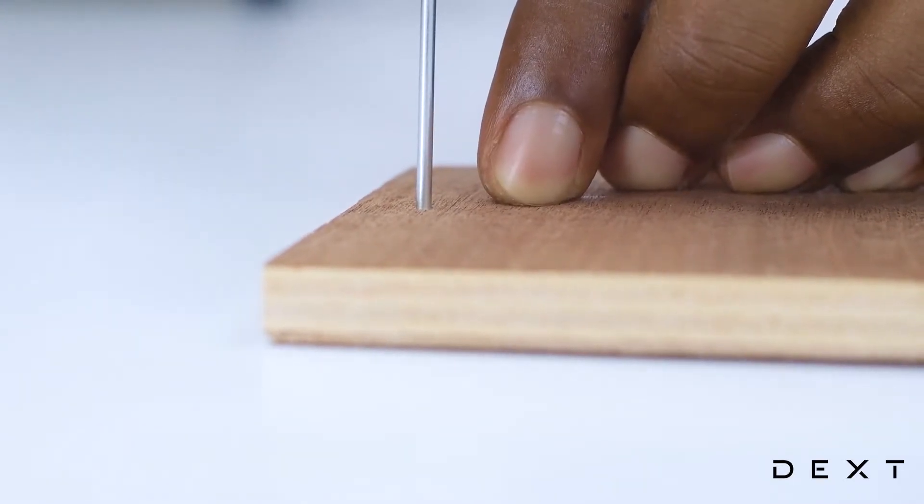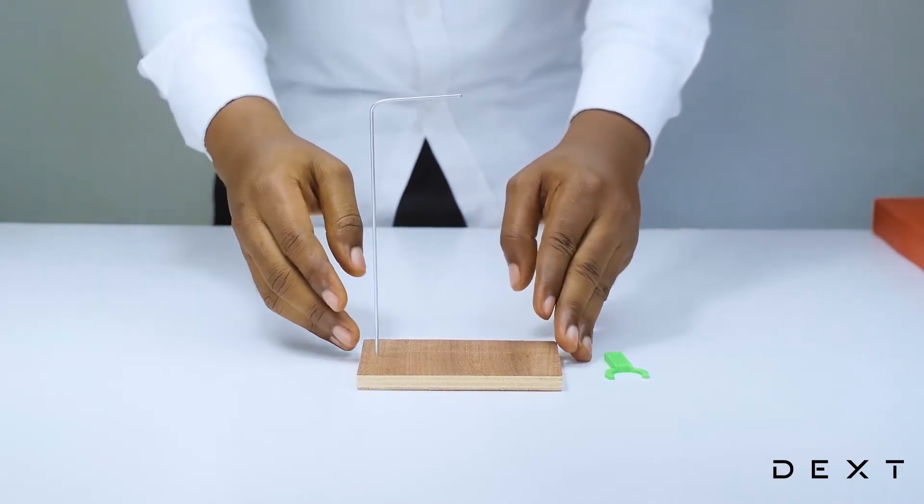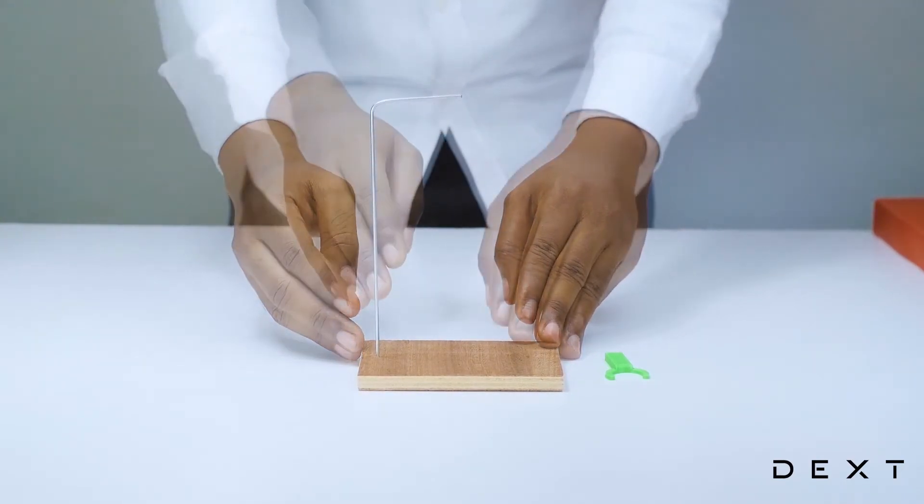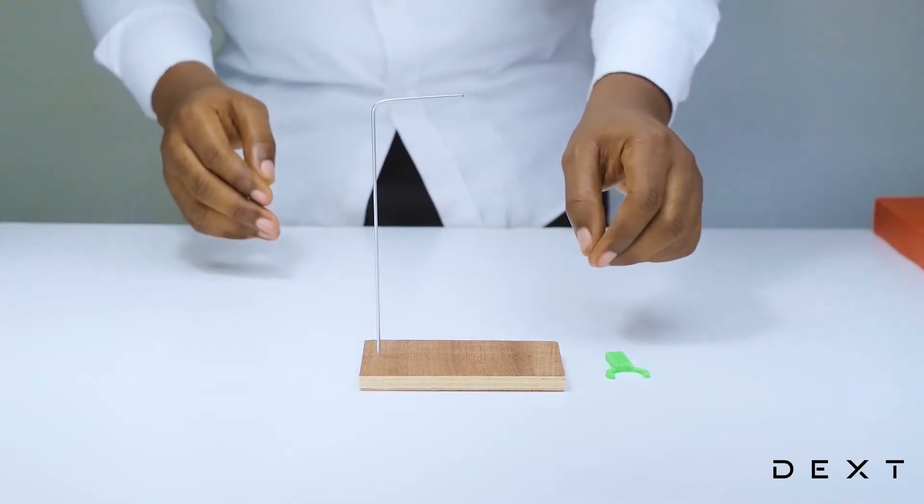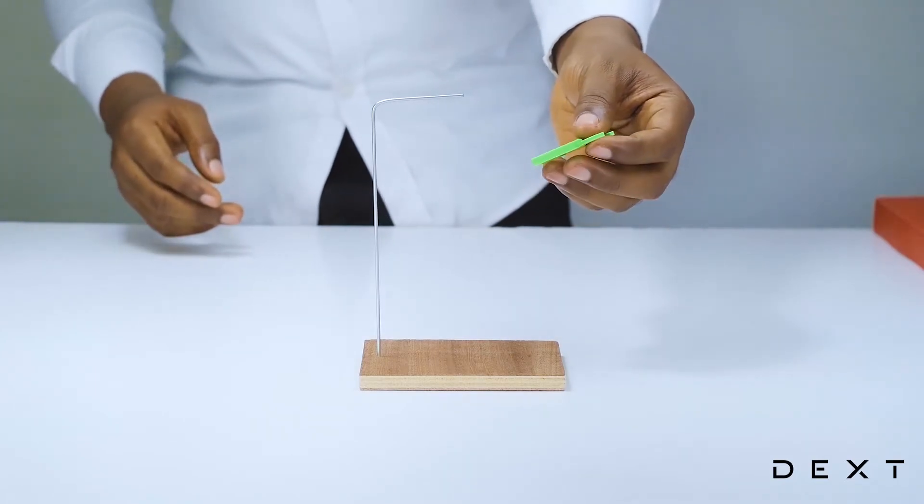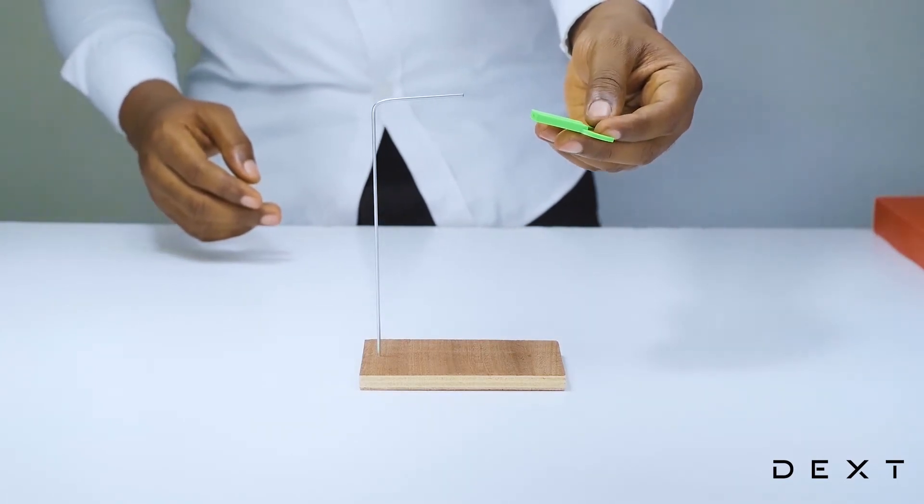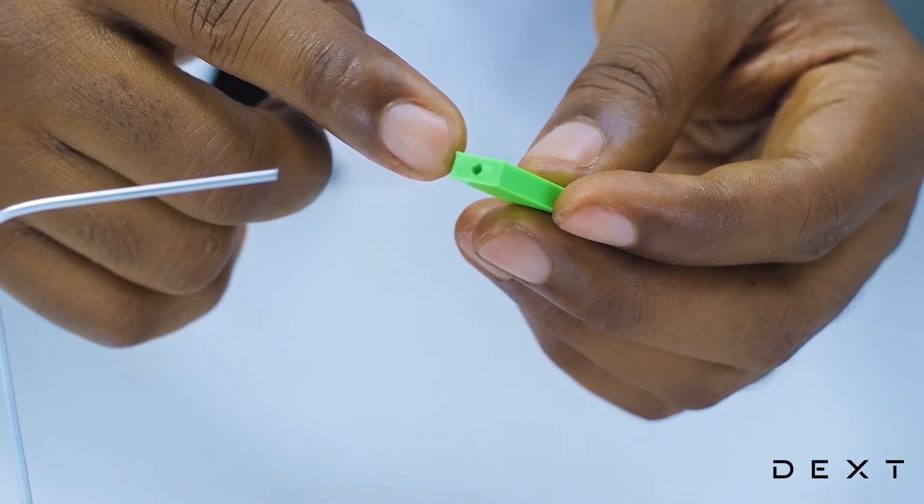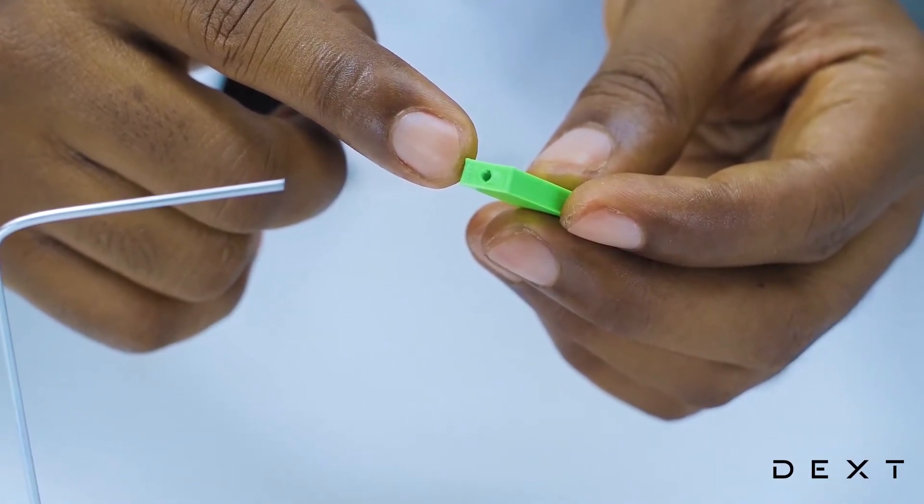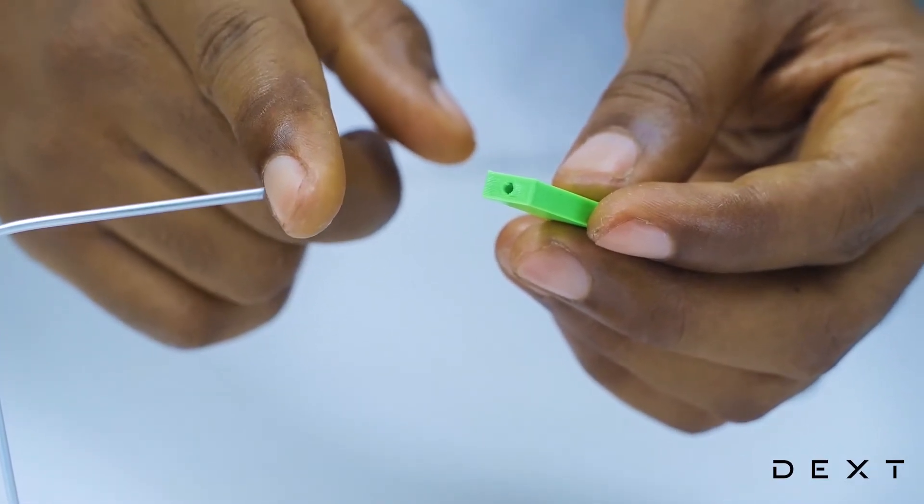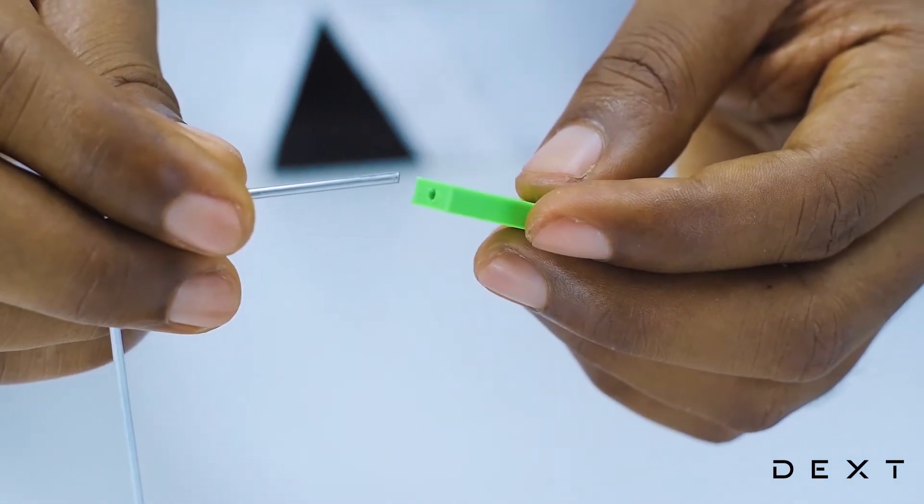Once you are done with this, just make sure your metal is pointing in the right direction. The next thing will be to place your plastic holder onto the metal. There is this tiny hole here that is going to go onto the metal piece. This might require some effort.